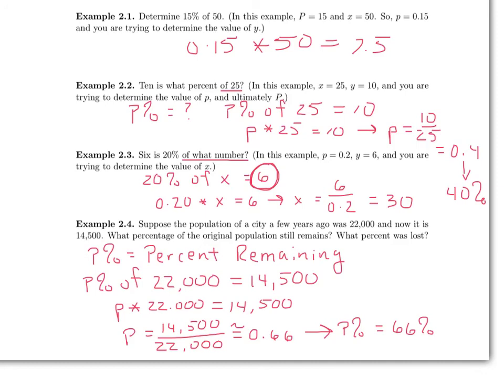Now remember, the 66% refers to the percentage remaining. So, this city still has 66% of its original population. So the percentage that was lost would be found by taking 100% and subtracting off the 66%, which leaves us with 34%.